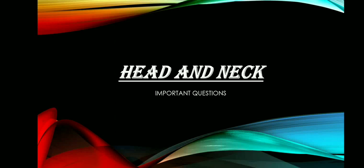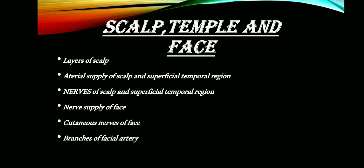Moving on with the first chapter, that is scalp, temple and the face. From this chapter, enumerate questions that can be asked include: all layers of the scalp, which is not that important; arterial supply of scalp and superficial temporal region, which is very important; nerve supply of scalp and superficial temporal region, again very important; nerve supply of face, not that important; cutaneous nerves of face, also not that important; and branches of facial artery, which is very important.